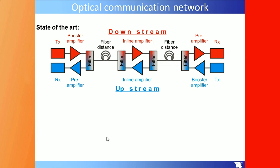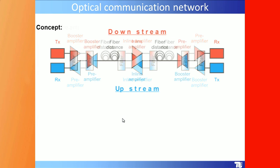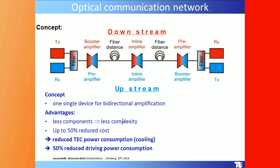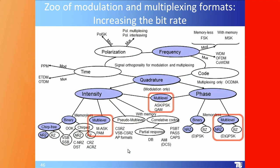For upstream and downstream in access networks, you normally need separate inline amplifiers for each direction. Using quantum dots, you can eliminate one of them and save 50% of the energy. One single device enables bidirectional amplification, meaning fewer components, less complexity, up to 50% reduced cost, reduced TEC power consumption, and reduced driving power.